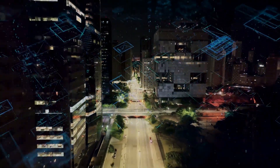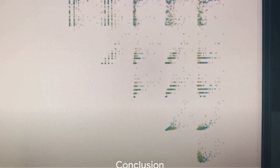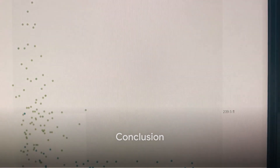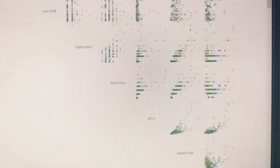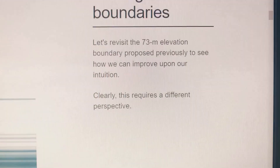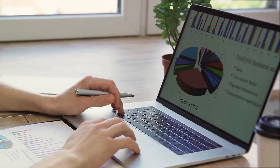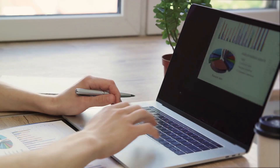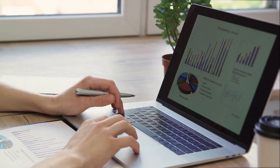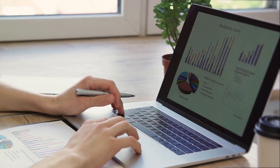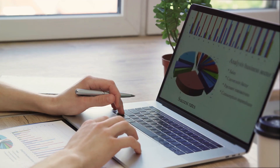Remember, these are not mutually exclusive. A robust data analysis strategy often involves both machine learning and statistical modeling. The key is to understand their strengths and weaknesses and to use them effectively in the right contexts.